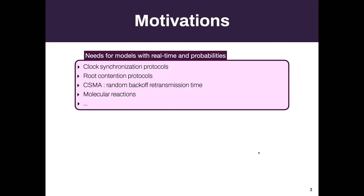In many contexts, it's important to have real-time constraints in the system. I listed here a couple of network protocols where real time plays a role, and probabilities are also useful in these protocols.